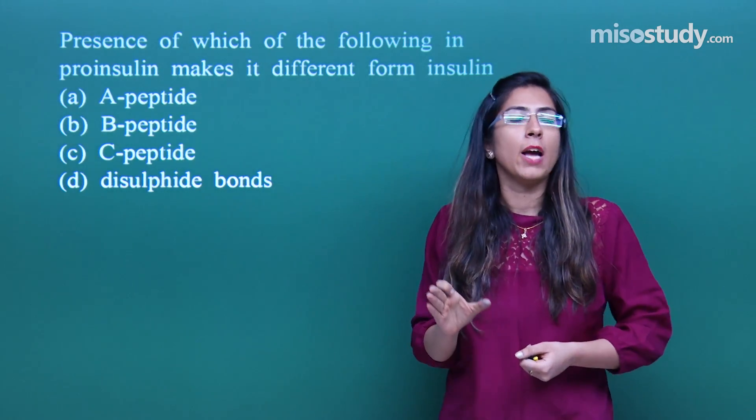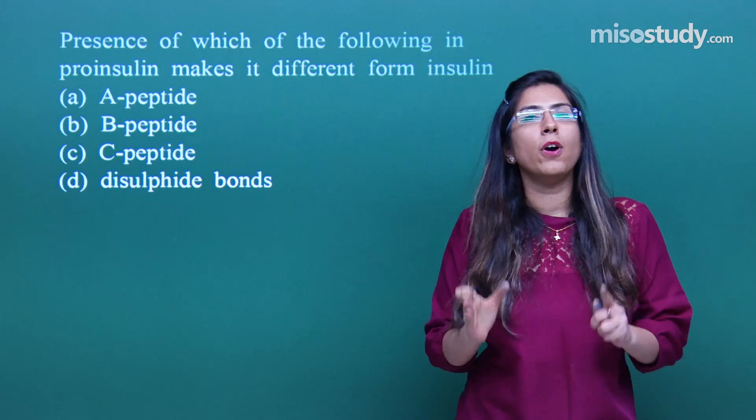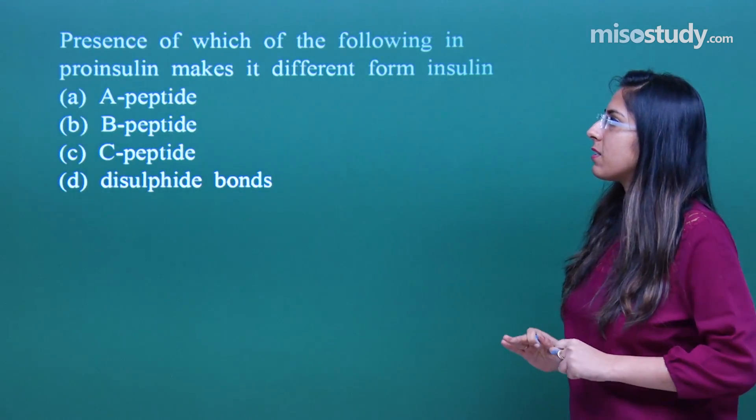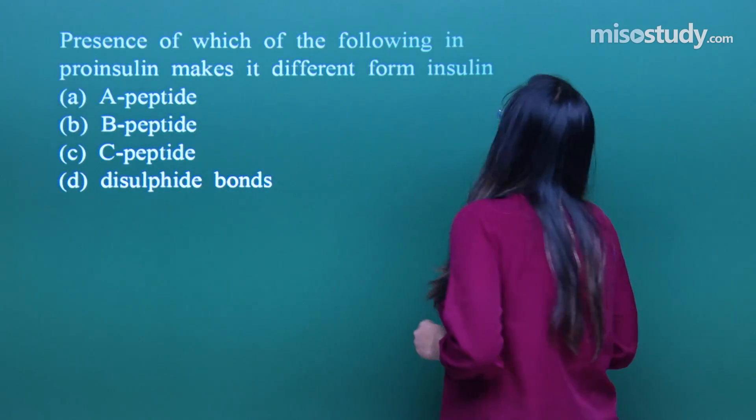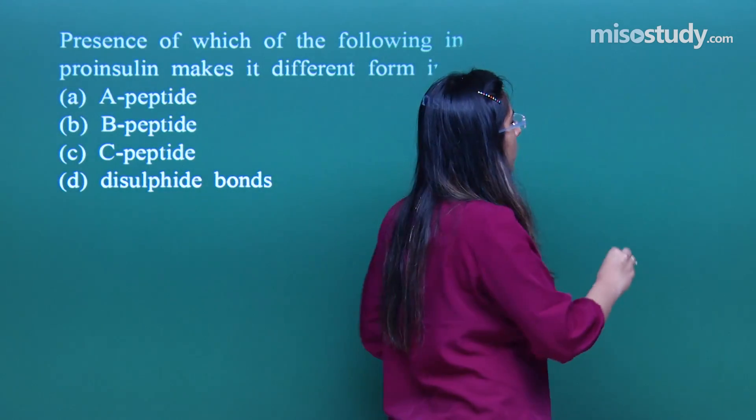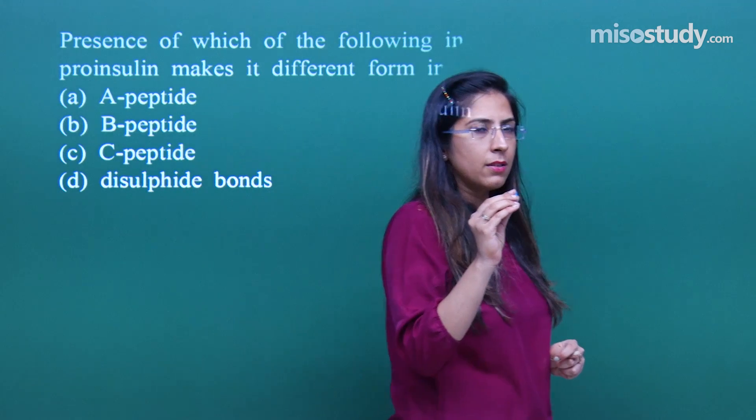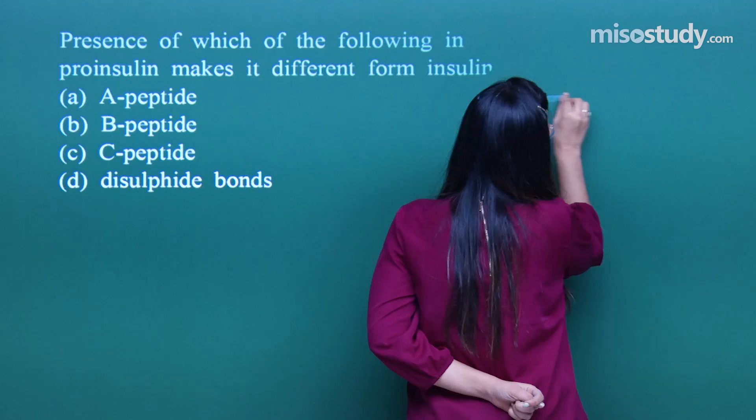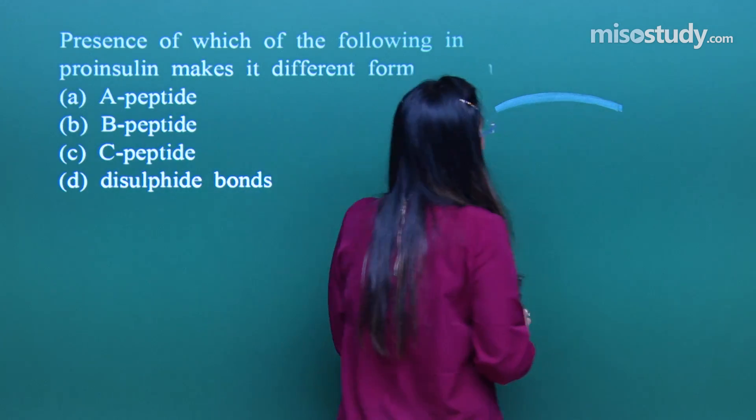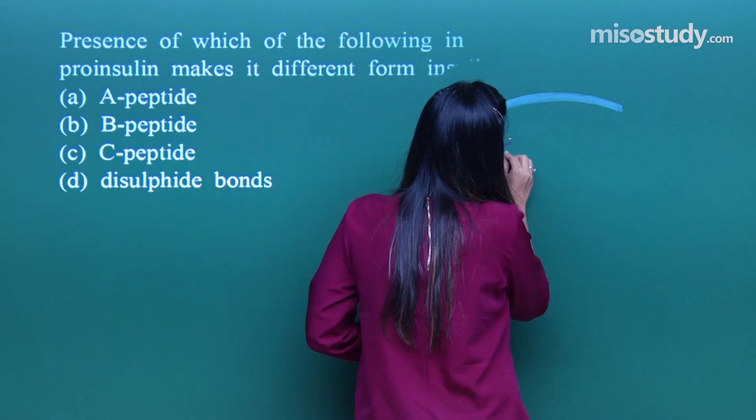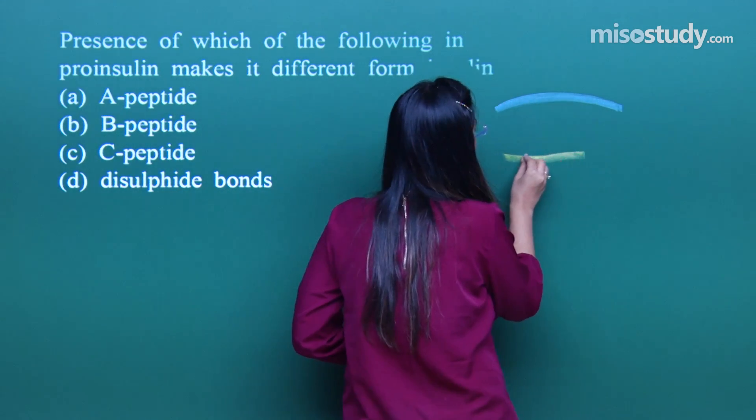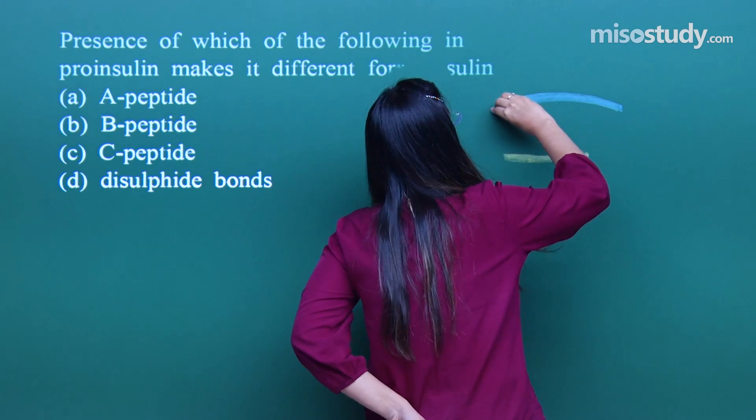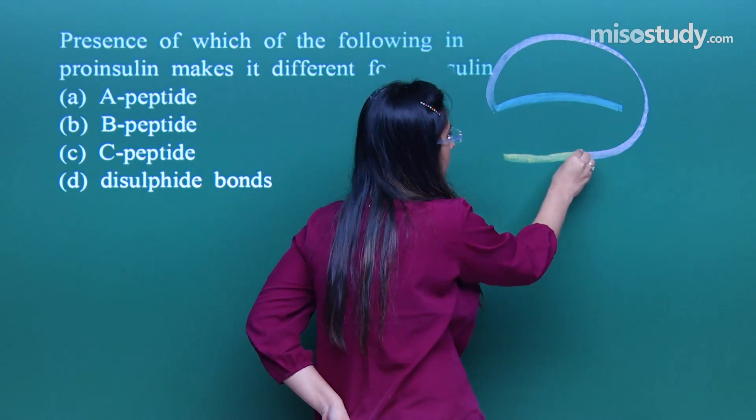So what we have to do? We have to convert this into insulin. For this, post-translational modification is done. Let us see what is the basic difference between pro-insulin and insulin. As I have already discussed with you, the insulin is made up of three chains. I am talking about the pro-insulin first. In the pro-insulin, three chains are present. One chain is called an A chain. Second is called a B chain and the third one is called a C chain.